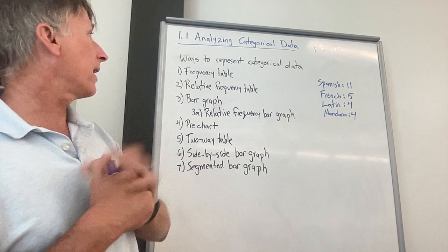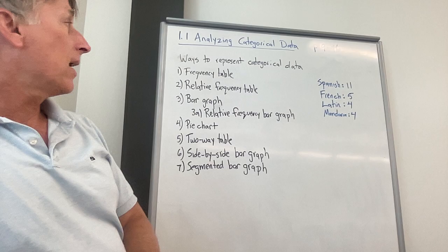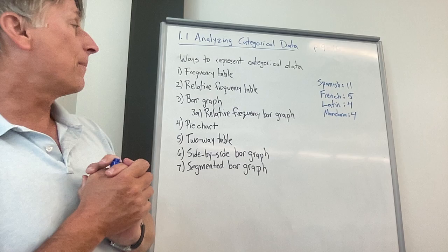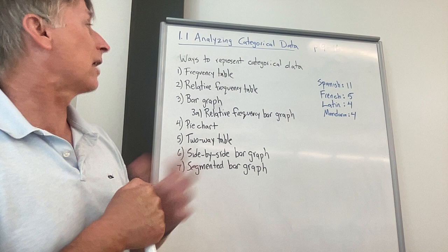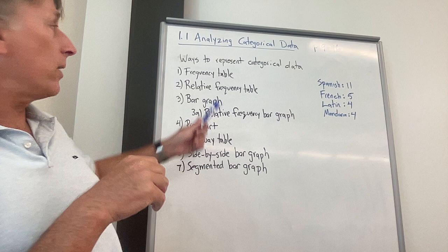Quantitative data is a number, whereas categorical data is some sort of category, usually a word or something like that. I've got some categorical data over here. I've got some fictitious class that has 24 students in it. Let's say it's our AP Statistics class, although we actually have far fewer than 24 students. This is the language that these Sacred Heart students took as their world language. Many seniors don't take a world language, but this is historically what language they took.